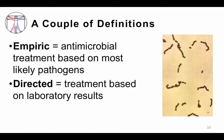Those terms — empiric and directed — are very specific. Empiric therapy is defined as antimicrobial therapy based on the most likely pathogens involved for a given disease. Directed antibiotic therapy is treatment based on laboratory results. You can't always get from empiric to directed therapy — sometimes you never know what organisms are causing the disease — but if at all possible, this is the direction you want to head in.